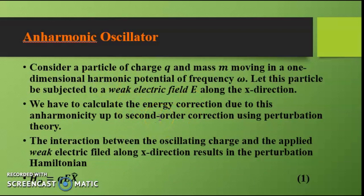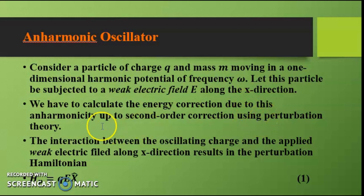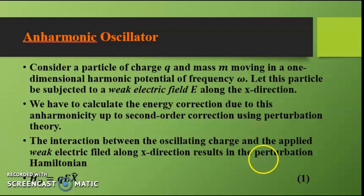Now we will do a calculation for an anharmonic oscillator due to a particle of charge q and mass m moving in a one-dimensional harmonic potential of cyclic frequency ω. Let this particle be subjected to a weak electric field E along the x-direction. We wish to calculate the energy correction due to this anharmonicity up to second order using perturbation theory. The interaction results in a perturbation Hamiltonian Hp = qEx — equation 1.